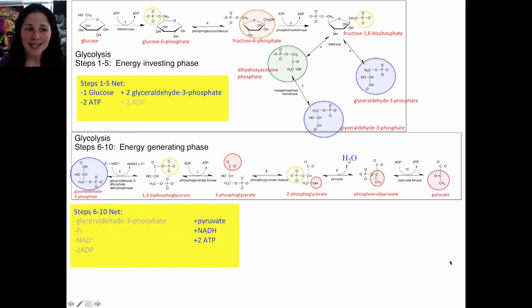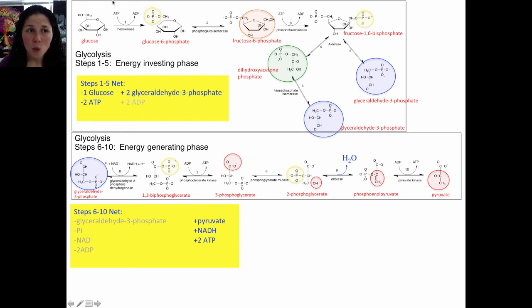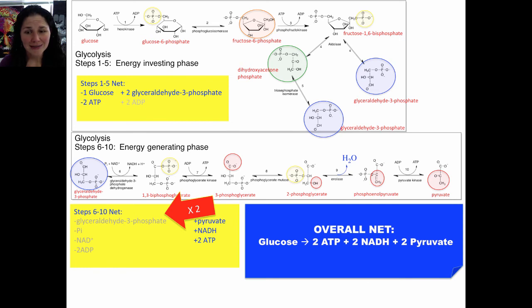The net result of one cycle of the last five steps is: one glyceraldehyde-3-phosphate, one phosphate, one NAD+, and two ADP in; and one pyruvate, one NADH, and two ATP out. Since there are two glyceraldehyde-3-phosphate molecules produced in the first five steps, the last five steps happen twice for one molecule of glucose. The net result of the entire process of glycolysis for one glucose molecule is: glucose and 2 ADP in; 2 ATP, 2 NADH, and 2 pyruvate out.